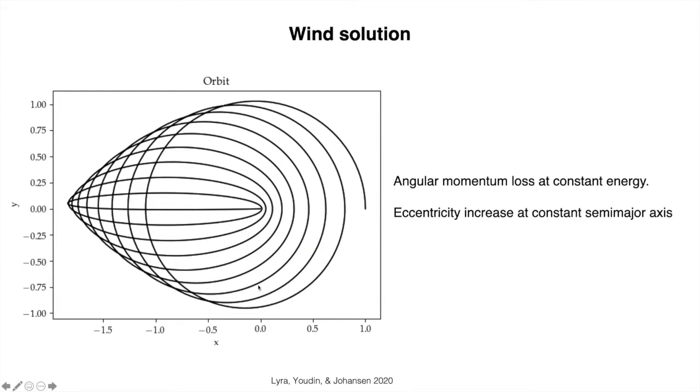but at constant energy, so that the semi-major axis in the end is still almost the same as it started with. Eventually, then the orbit becomes a line and then they plunge into contact when the eccentricity becomes 1.